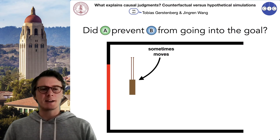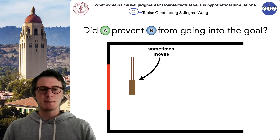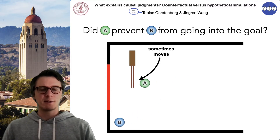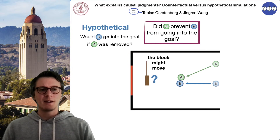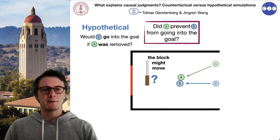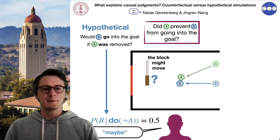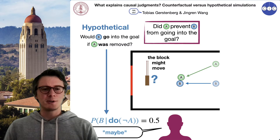We had a clip where we asked participants whether A prevented ball B from going into the goal, but the scene also features an additional block that sometimes moves and sometimes stays put. A participant would watch such a clip and be asked whether A prevented B from going through. If participants' causal judgments were guided by hypotheticals, then the hypothetical is uncertain because it depends on whether or not the block is going to move.